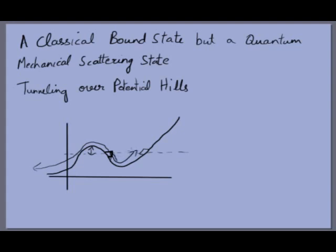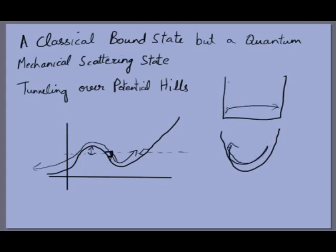This is the first case where we see a difference between bound and scattering states for classical versus quantum mechanics. These two types of states in quantum mechanics correspond to the two different types of solutions. For the infinite square well or the harmonic oscillator, the potential went to infinity at both ends — giving a bound state. However, if the potential did not go to infinity, you would have both bound state solutions and scattering state solutions, where the particle could tunnel through a barrier.